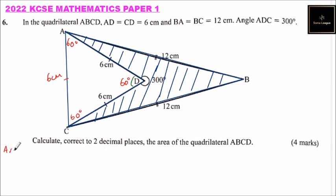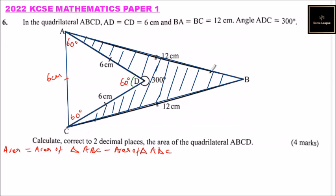To get the shaded area, the area required equals the area of triangle ABC minus the area of triangle ADC. That gives us the remainder — the shaded area. We can get the area of triangle ABC because we have all three sides: 12, 12, and 6. We can use Heron's formula to get the area.